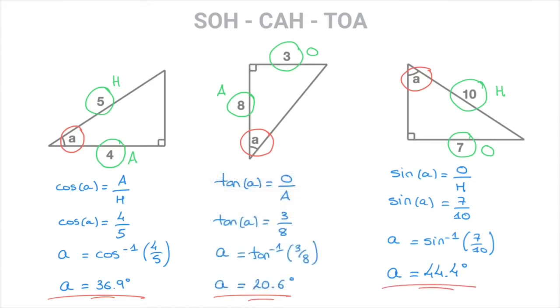And so we now know how to find unknown angles in right-angled triangles using SOH CAH TOA. And that's it for this tutorial.